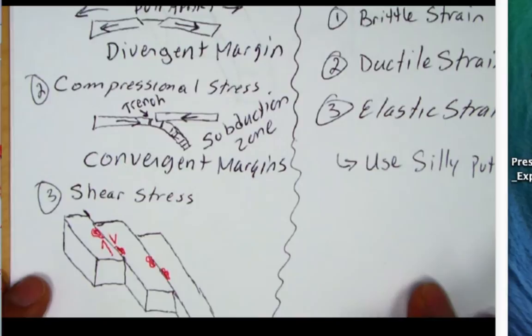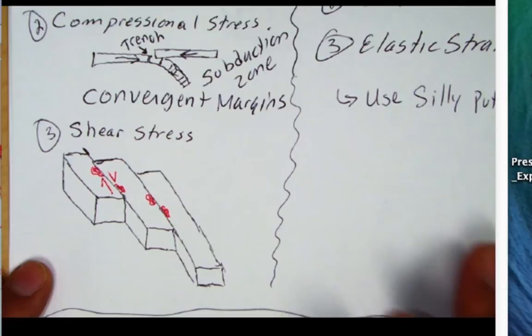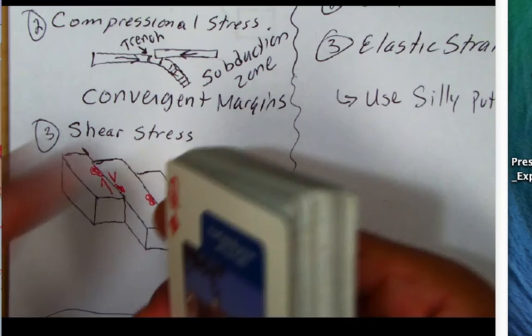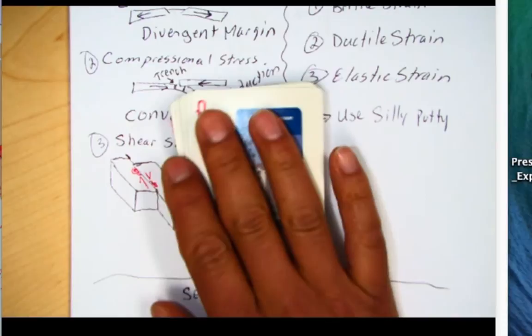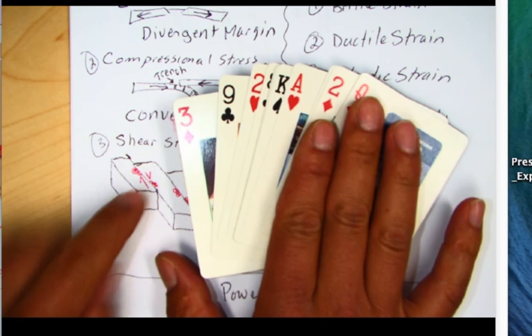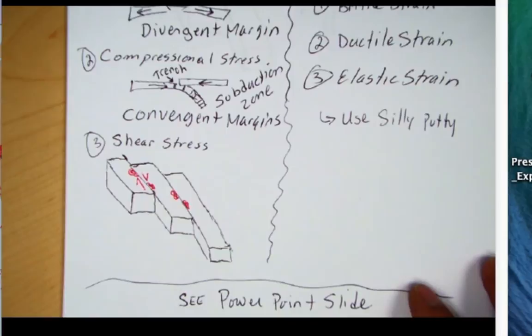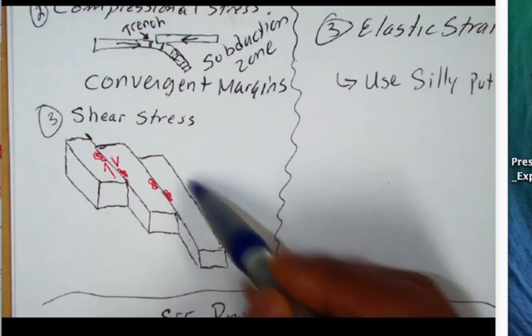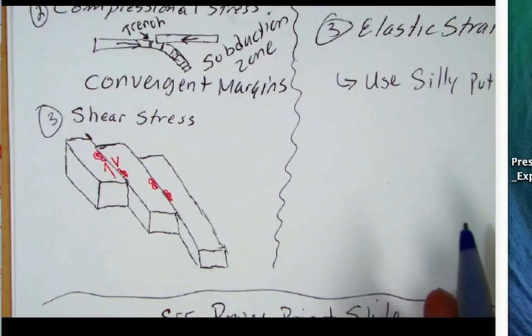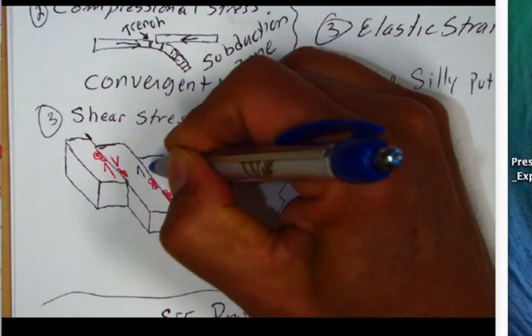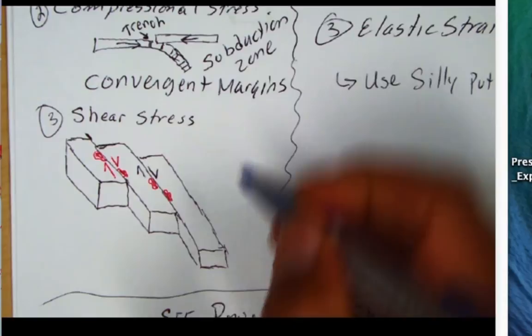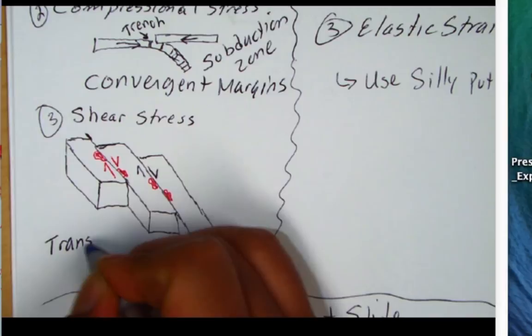The third type of stress is common to the San Andreas Transform and is called shear stress. Think of shear stress like a deck of cards — you slide them by each other. One block is sliding by the other with an offset. That's typical of the San Andreas Fault, where this block is moving north relative to the other block along a transform fault. This is the transform boundary.